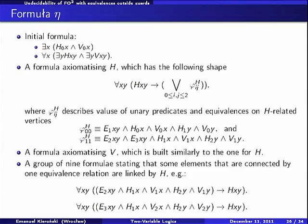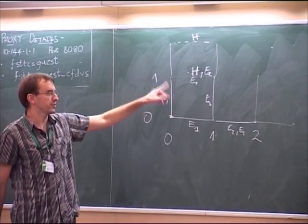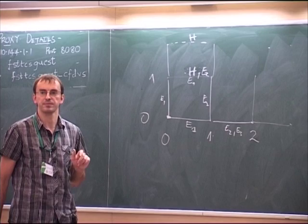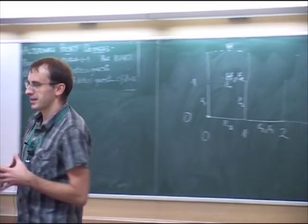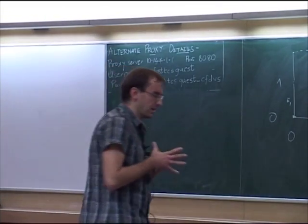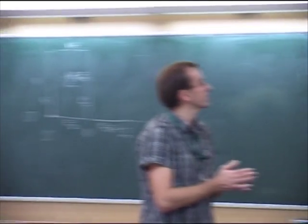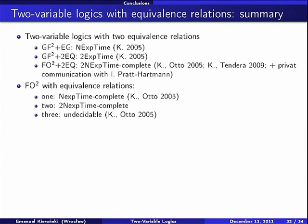Okay, so now I would like to go to conclusion. These were all results I wanted to present. Some in detail, some in sketches. Let me just summarize some results and tell you about some related results. So regarding two variable logics with equivalence relations, we have the following interesting small hierarchy, let us say.